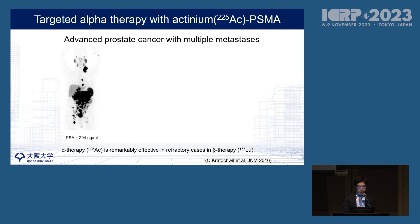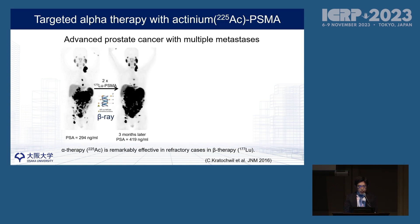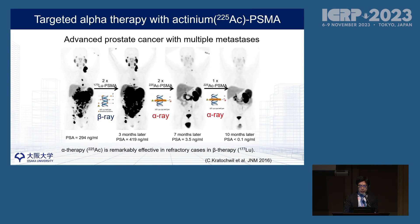I'd like to explain Targeted Alpha Therapy with Astatine-PSMA. Targeted Alpha Therapy, or TAT, is getting big attention because in 2016, the University Hospital Heidelberg group reported that in advanced stage prostate cancer patients, a patient showed progression with beta therapy using lutetium-PSMA, but showed complete remission after three doses of Astatine-PSMA therapy. So alpha therapy is very effective even in patients refractory to beta therapy.